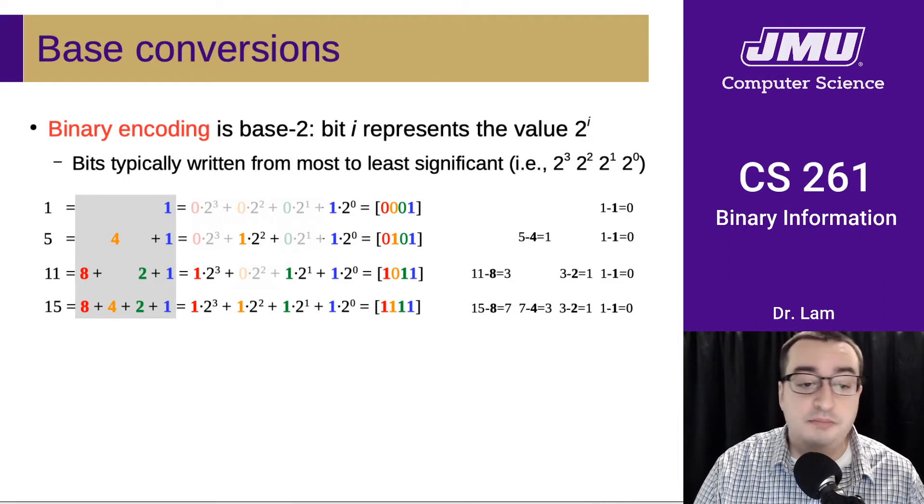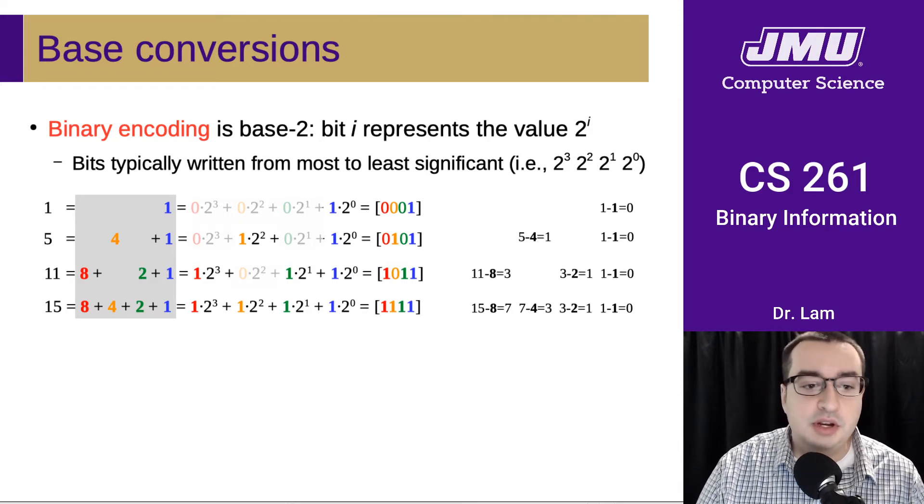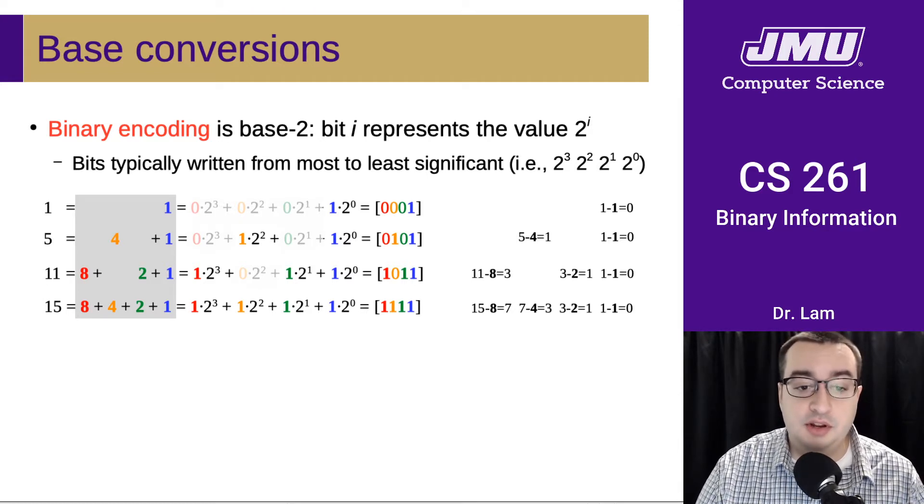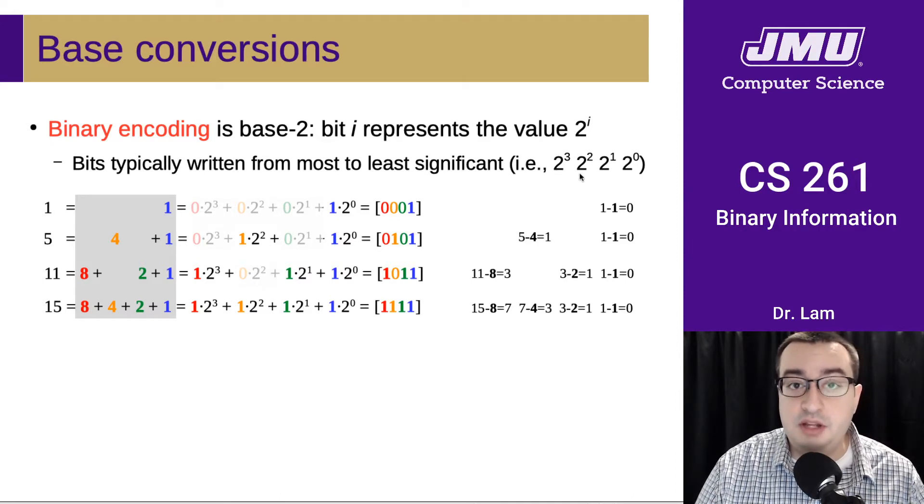The ith bit represents the value 2 to the i. Bits are typically written from most significant to least significant, so the leftmost bit is the highest power of 2, then the next bit is the next lowest power of 2, and so forth.